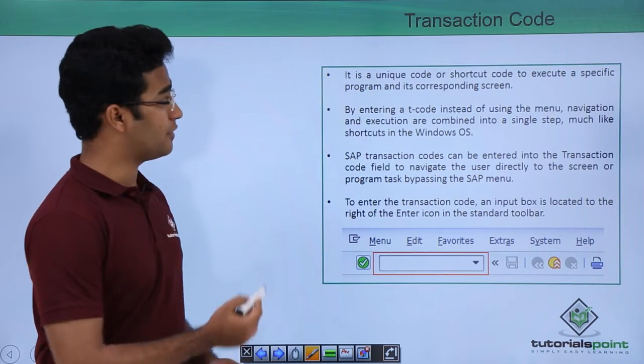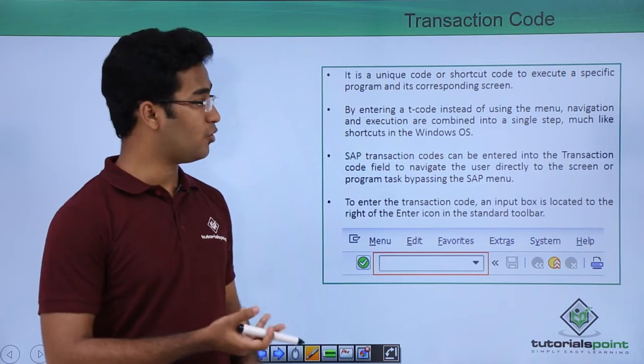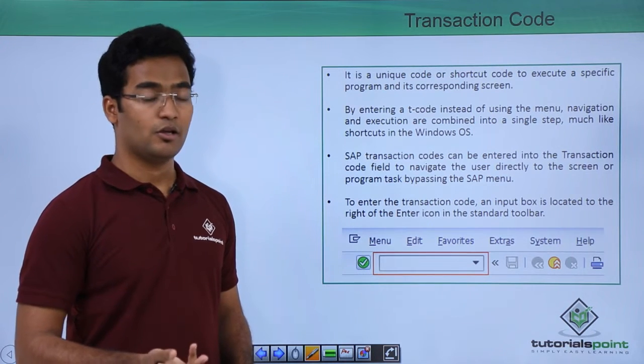So let us see what exactly is a transaction code. It is basically a unique code or a shortcut code so that we can execute a specific program or its specific corresponding screen.